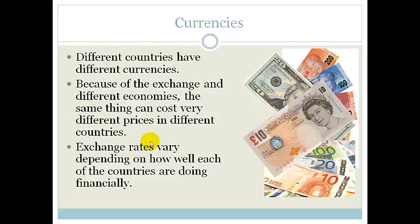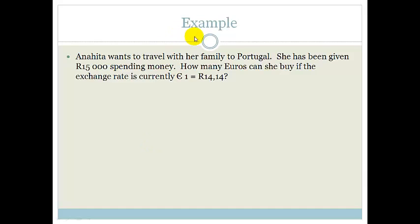Now, the best way for us to get to grips with currencies and exchange rates is to do examples. So let's look at an example. Anna Hitta wants to travel with her family to Portugal. She has been given 15,000 Rands spending money. How many Euros can she buy if the exchange rate is currently 1 Euro to 14 Rands?